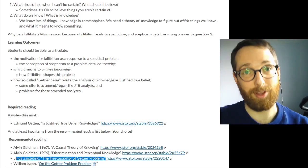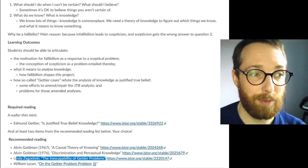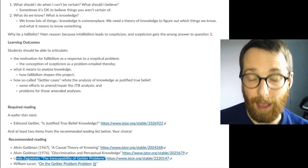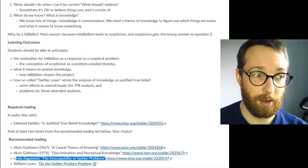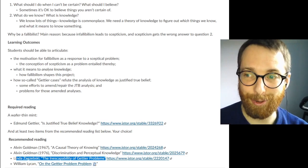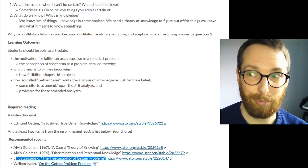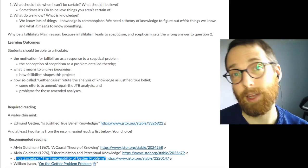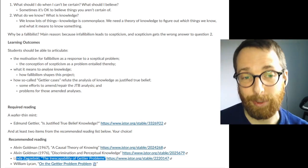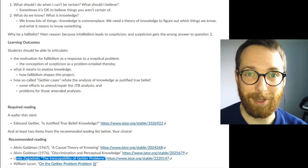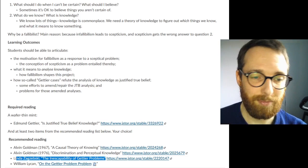You've got a paper by Linda Zagzebski arguing that not only has every attempt so far up to that point to repair the justified true belief analysis, not only have all of those failed, but in principle, any true belief plus X theory of knowledge analysis of knowledge is going to fail. If it is fallibilist, you will always be able to come up with Gettier type cases, Darmottara type cases, whatever you want to call them.